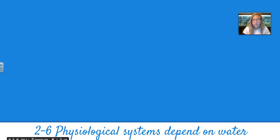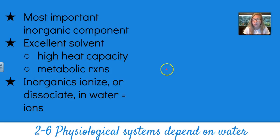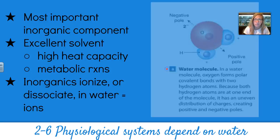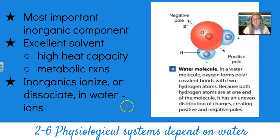Section 2-6 covers the physiological systems that depend on water, which of course is our body. Water is the most important inorganic component — it's an excellent solvent, it has a high heat capacity, and it helps with pretty much all of our metabolic reactions. Inorganics ionize or dissociate in water, which is how we get our ions.